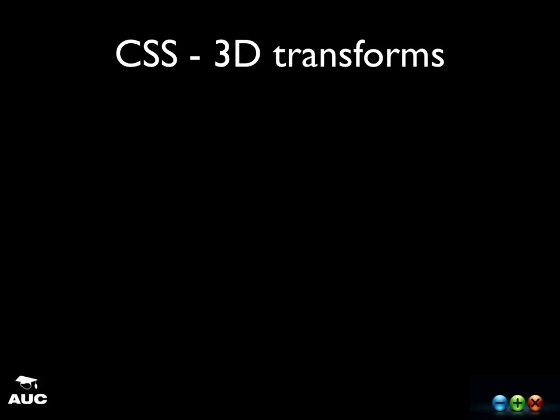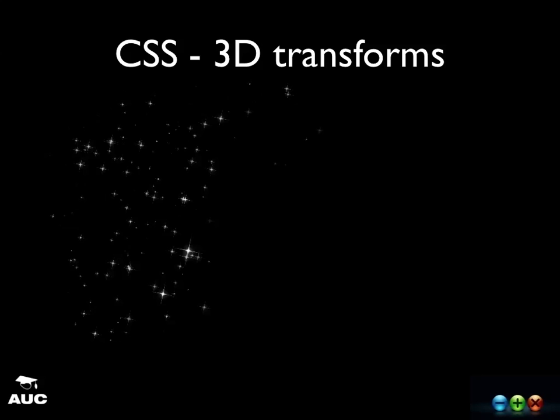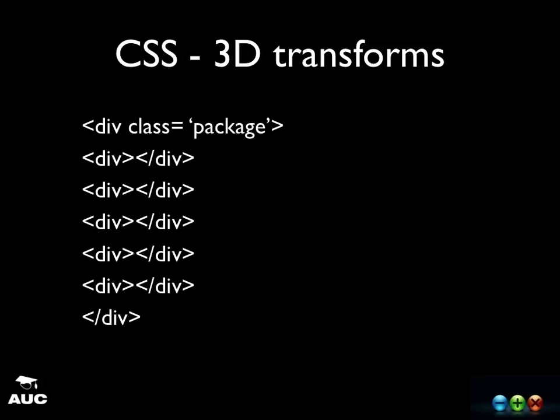The first thing we want to do is make a box that we can transform in 3D space in our web browser. The HTML coding is as simple as it gets: we've got a div, and inside it we've got 5 empty divs. And that's all we have to do. The real work is going to come in the CSS file.